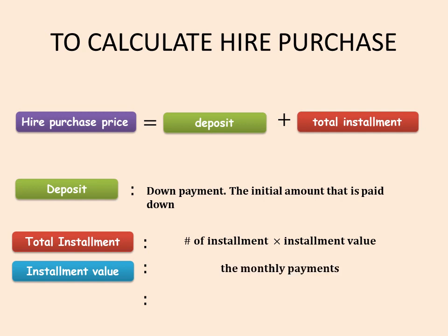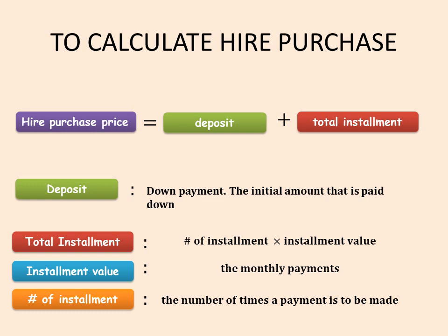The installment value is basically the monthly payments. After you make a deposit, Courts or whatever furniture store tells you that you have to make some payment every month — that monthly payment is the installment value. The number of installments is the number of times a payment is to be made. This will become clearer when we do some examples.